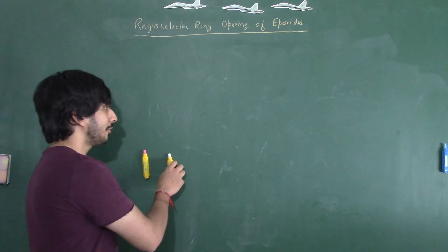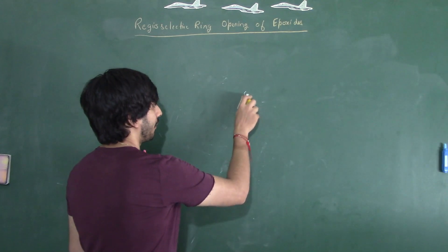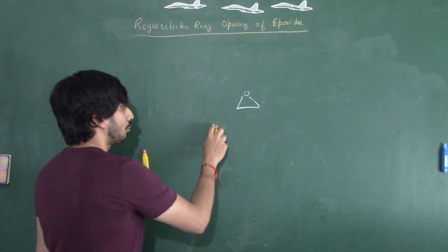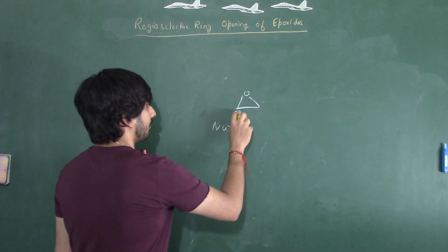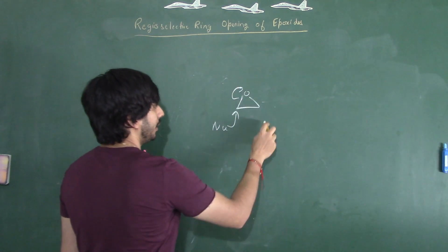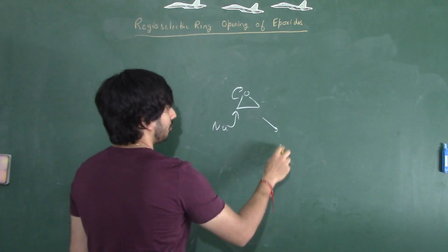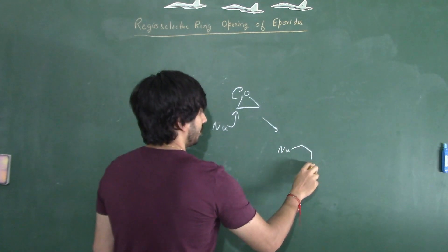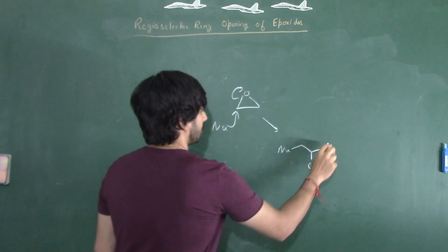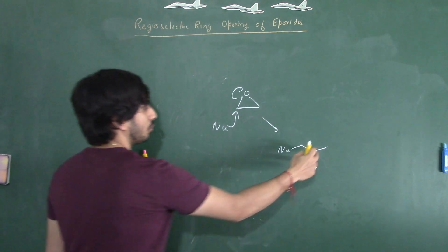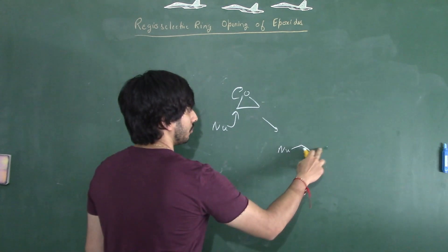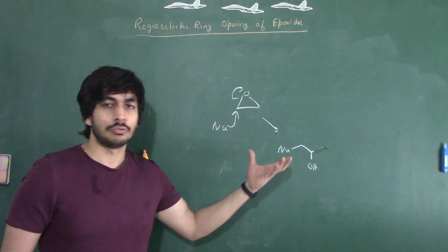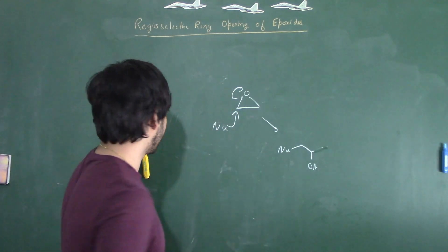Now if we have a simple epoxide and we add any nucleophile, that nucleophile can come and lead to ring opening of the epoxide. We will basically get the nucleophile attached to give the product. This is the simple SN2 reaction and the epoxide ring opening will take place.